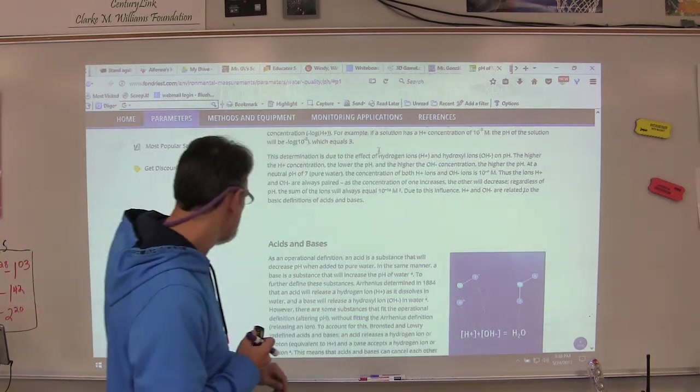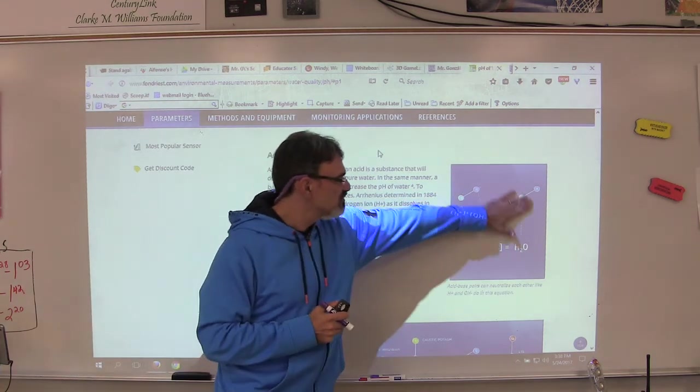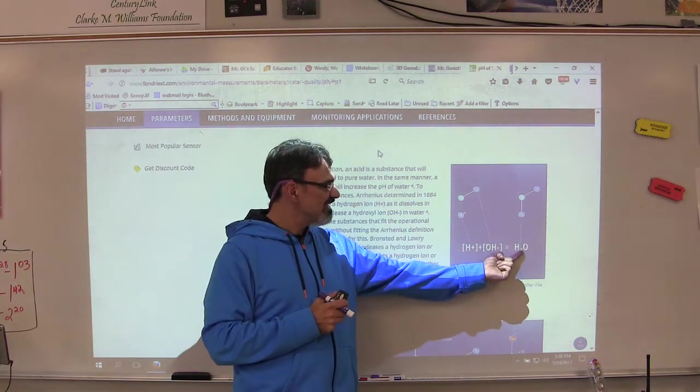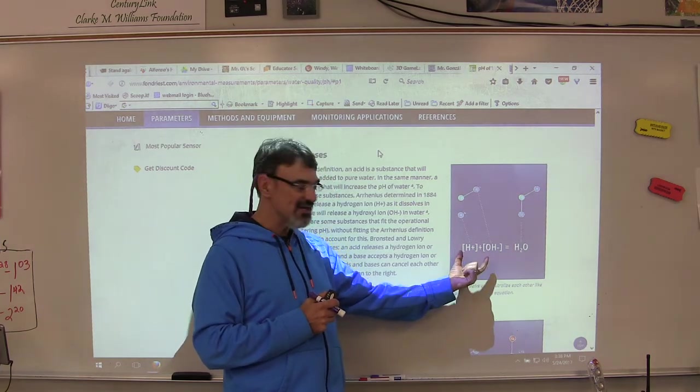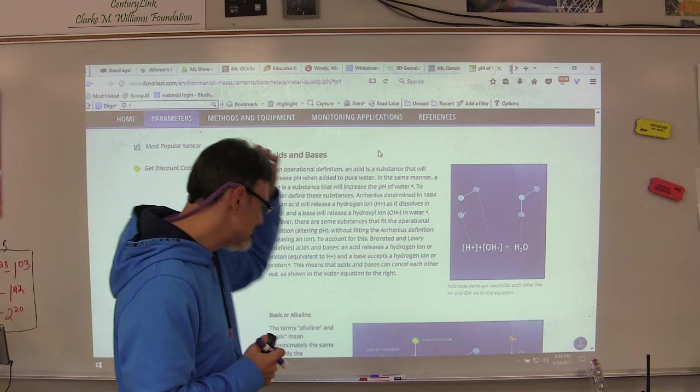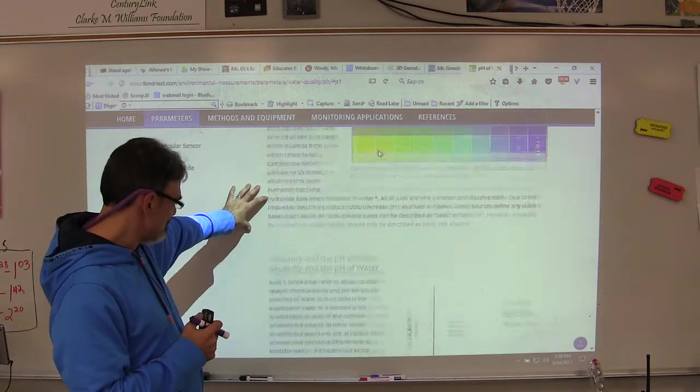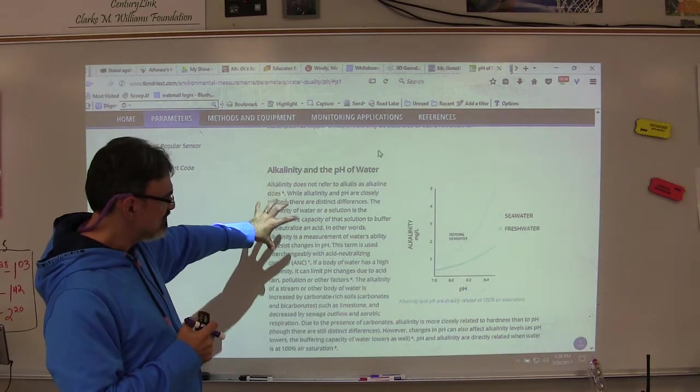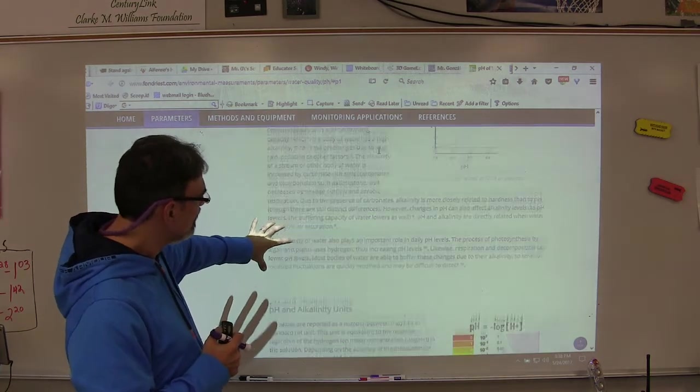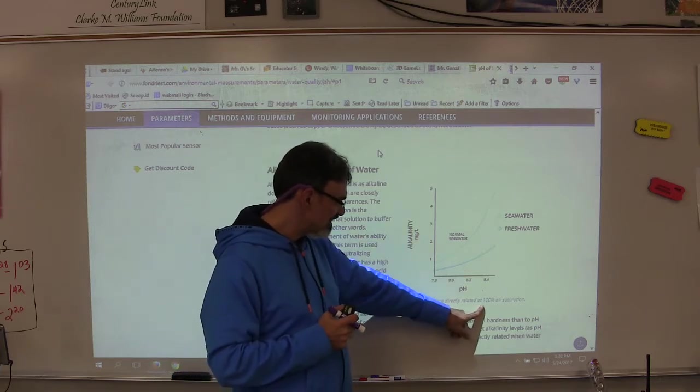Scrolling down, this next paragraph - here's what I was showing you about how H2O can be separated into positive hydrogen, negative hydroxyl or hydroxide. This we can skip. This we can skip. Alkalinity and pH are directly related.